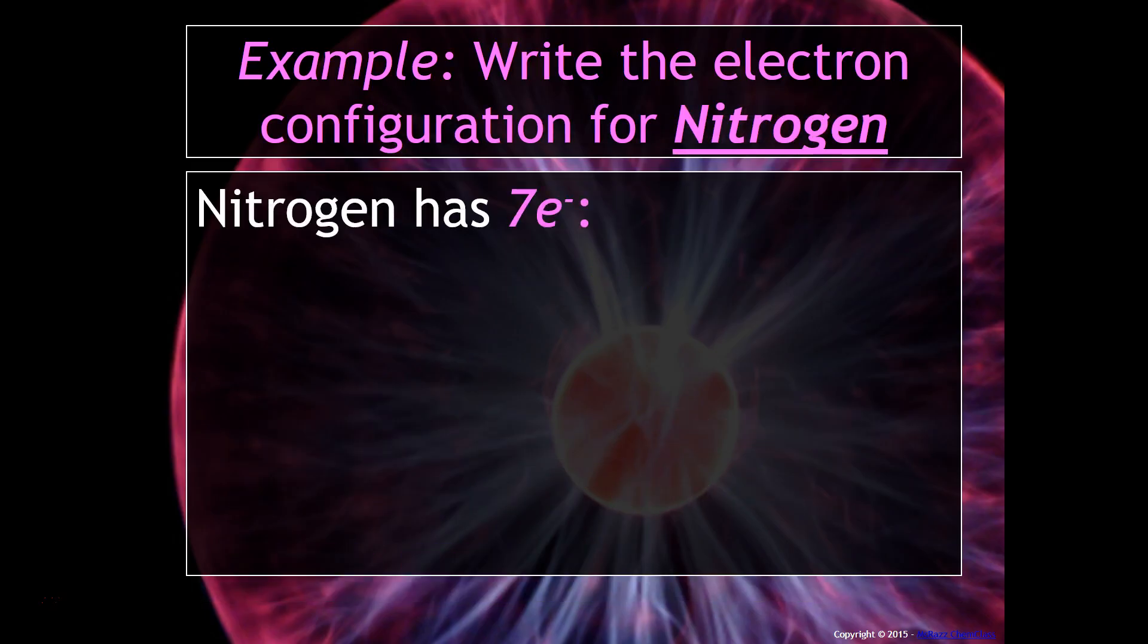Let's talk about nitrogen. Nitrogen has seven electrons. The electron configuration for nitrogen would look something like this.